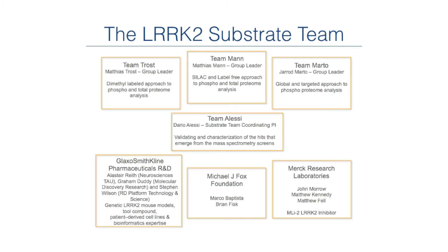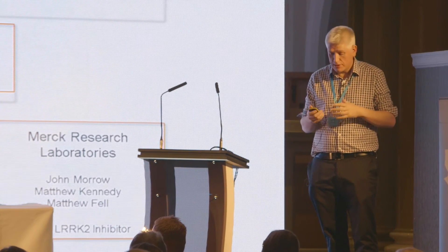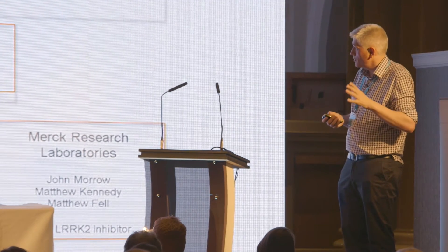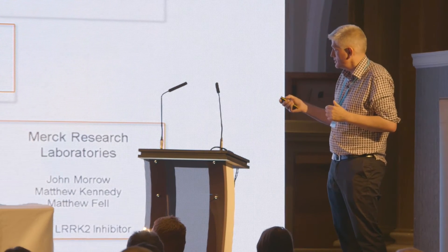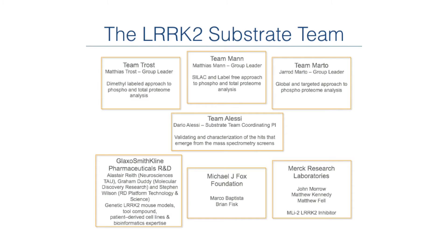By 2010, I realized that rather than working as an individual lab, we needed to work as a team. This is probably the most complicated and hardest project I've ever been involved in. I managed to get funding to put together a team of three different labs running a technology called mass spectrometry — a very sophisticated chemical process to search for the one protein in the cell that becomes over-phosphorylated when you have the LRRK2 mutation. With 30,000 proteins phosphorylated at many sites, it's like finding one chemical out of over 100,000–200,000.